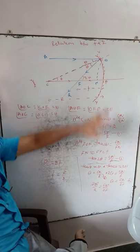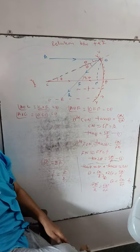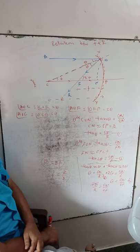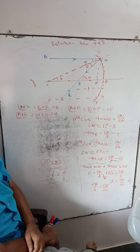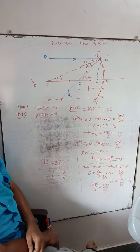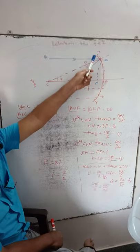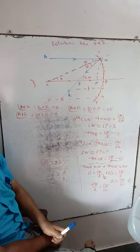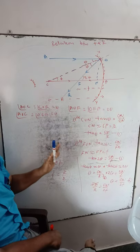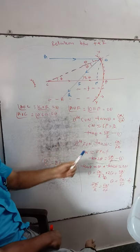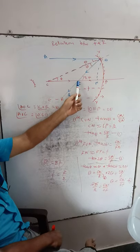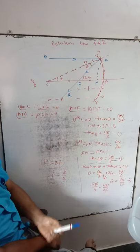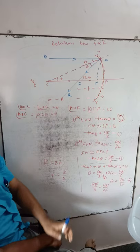The relation between focal length of the spherical mirror and its radius of curvature — relation between small f and R. XY is the small aperture of the concave mirror. Its pole is P, principal focus is capital F, and center of curvature is C.